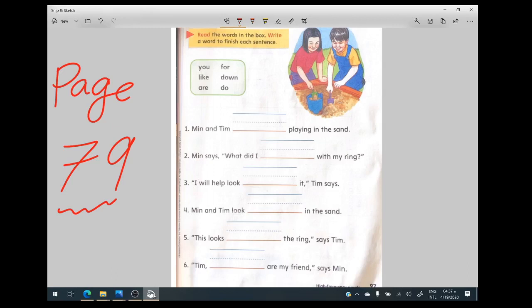Hello everyone, welcome back. We will continue with the high frequency words. Today is Monday, April 20, 2020. Yesterday we were talking about some words and today we will continue with Dolch List sight words. Let's begin. The first words we have today are: you, for, like, down, are, and do.